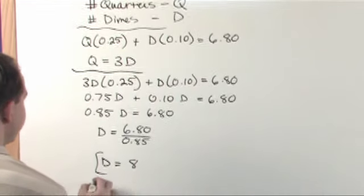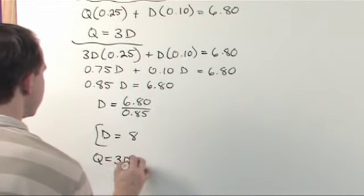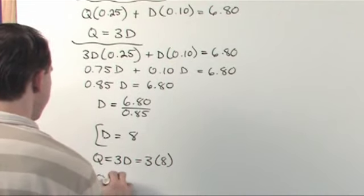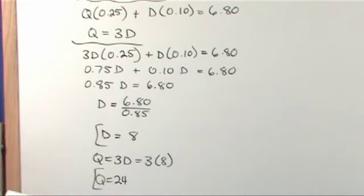And to find the number of quarters you just use the other equation. Number of quarters is 3 times the number of dimes which is 3 times 8. So the number of quarters you have is 24.